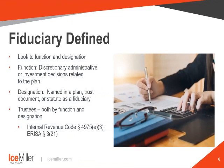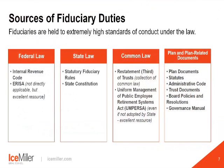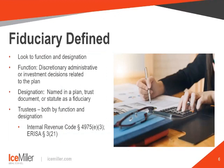So how does the code define fiduciary? Two ways: an individual or entity can be a fiduciary by function or by designation. By designation simply means the plan or a rule states that they are a fiduciary. An individual or entity can also be a fiduciary by function, meaning the individual has the authority to make discretionary administrative or investment decisions related to the plan. This can include anyone who chooses, evaluates, or monitors service providers, or anyone who can bind the plan through contracts. The key is having the authority — it's not actually the implementation of the authority, but just having the capacity and the right to make the decision.